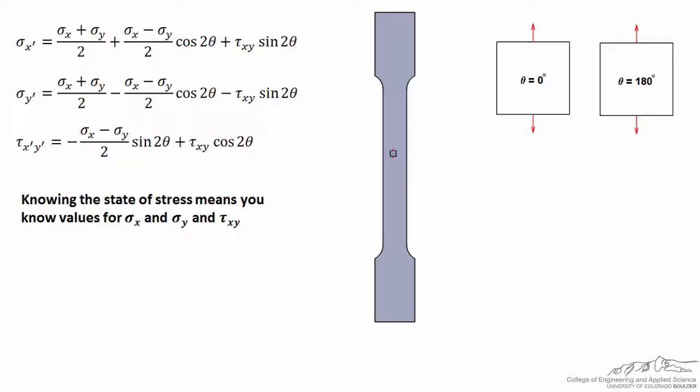Now if I set theta equal to 90 degrees, we find that the cosine of 2theta, or cosine of 180 degrees, is equal to negative 1, and the sine of 90 degrees is equal to zero, so these terms drop out. What we find is when theta is equal to 90 degrees, sigma_x' is equal to sigma_y, sigma_y' is equal to sigma_x, and tau_x'y' is equal to negative tau_xy.